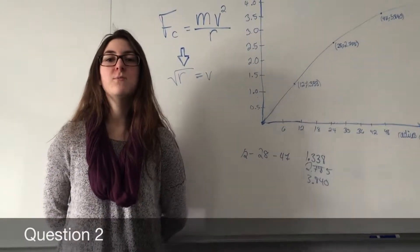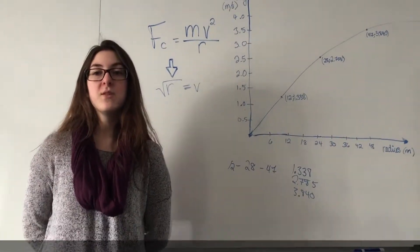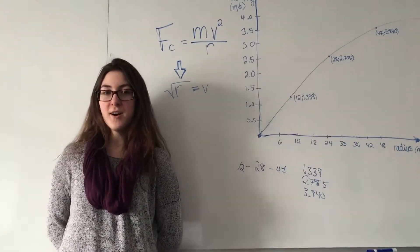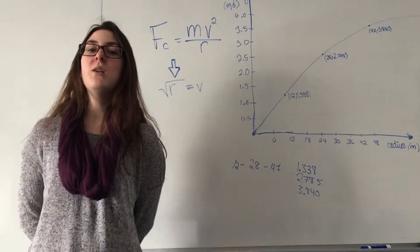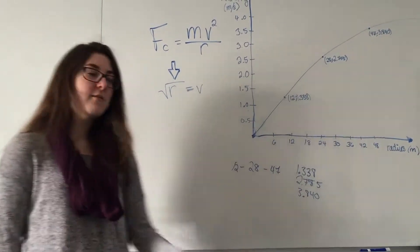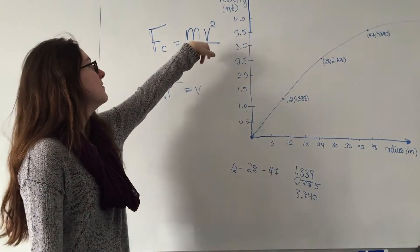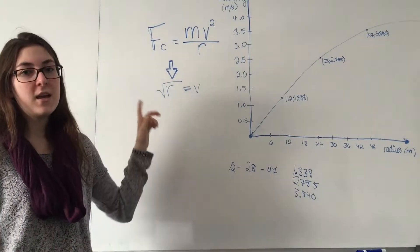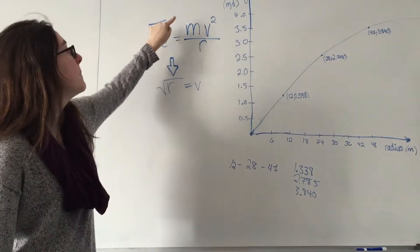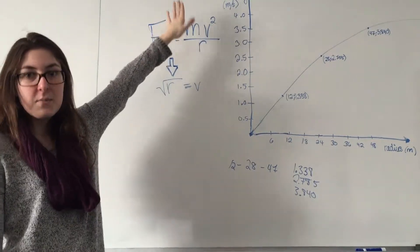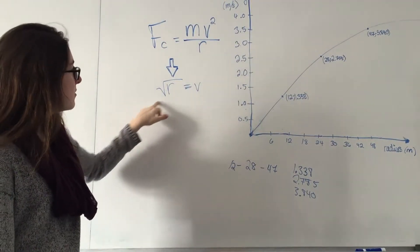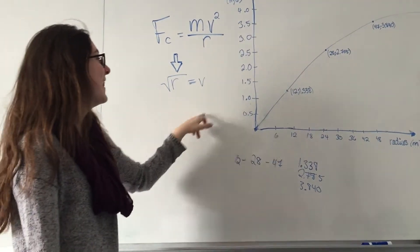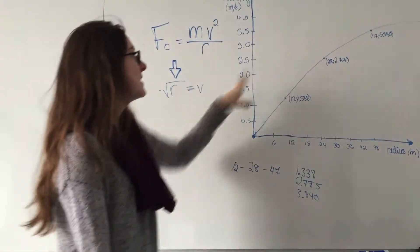Question 2: What is the relation between radius and velocity if centripetal force remains constant? The greater the radius, the greater the velocity. In the formula, Fc = mv²/r, if centripetal force and mass remain the same, we end up with velocity proportional to the square root of r. We can see this in the graph here.